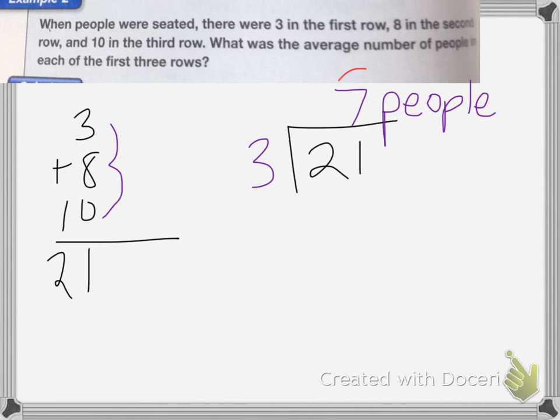Notice seven is bigger than the three in the first row, but it's less than the ten in my final row. The average is the middle, going to be in between the greatest and the smallest set of people.